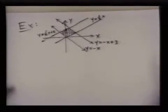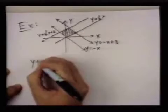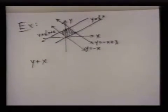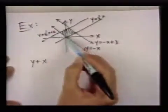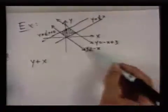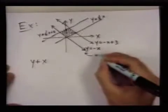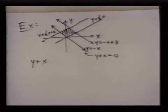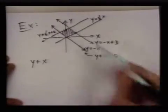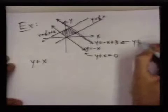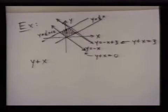One way to do that is to think about the quantity y plus x. So when we're on this line here, we're on the line y equals negative x. So on this line, y plus x is always equal to zero, and when we're on this line here, y plus x is equal to three.